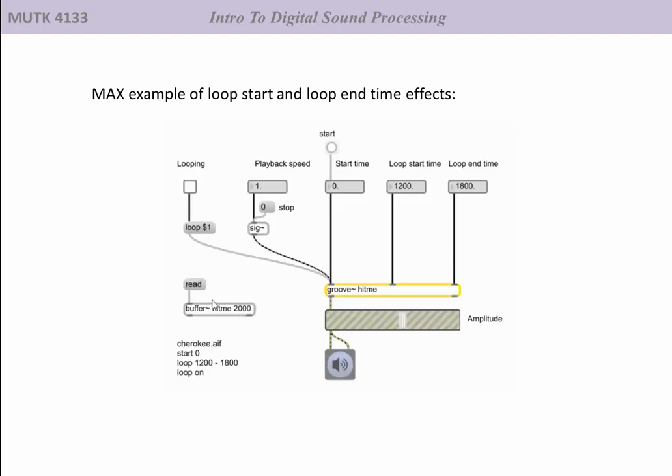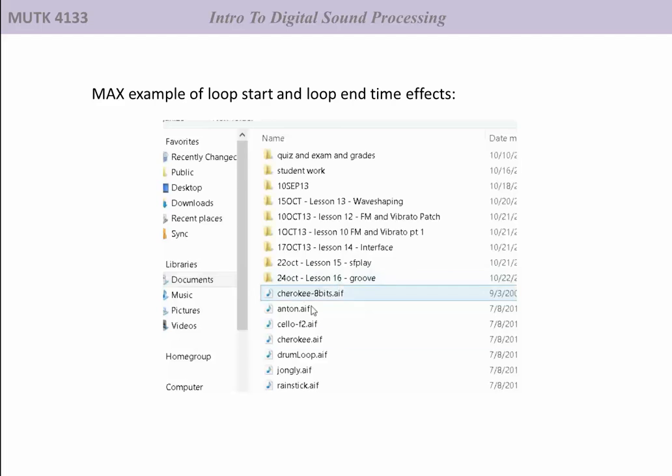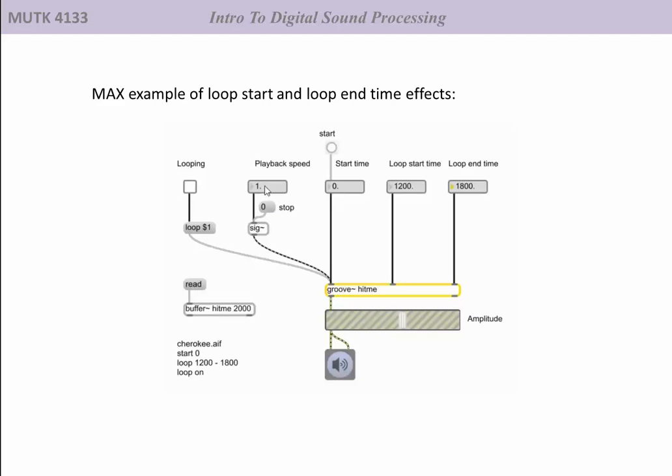I'm going to do an example here using the Cherokee sound file. We'll go ahead and read that into the buffer. And we'll start with looping off, normal playback speed, starting at start time 0.